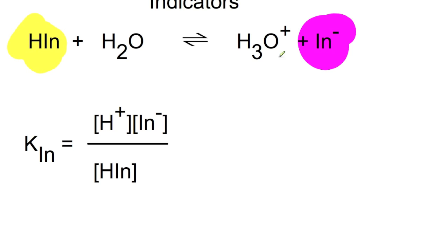Since this is an equilibrium reaction, we are able to write an equilibrium constant K, in this case KIN for indicator. This is H+ multiplied by IN- divided by HIN. H2O is ignored as it is a liquid and therefore it has a value of 1 in the equilibrium constant.